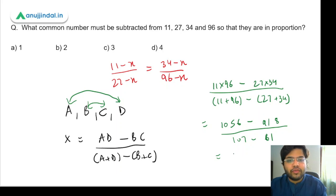So 1056 minus 918 can be written as 138, and 107 minus 61 comes out as 46. And 138 by 46 gives us 3. So the correct answer would be option C.